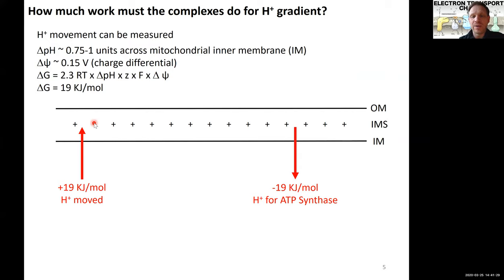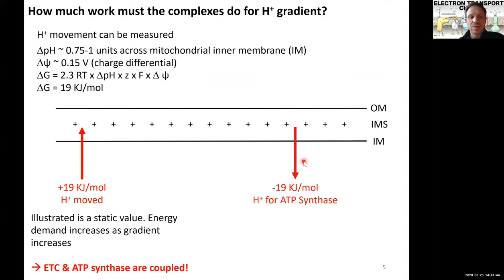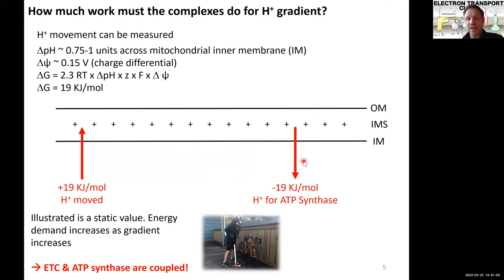This also means that we are releasing an equivalent of 19 kilojoule per mole of protons flowing spontaneously back across a membrane that can be used by the ATP synthase later. But please keep in mind that this is illustrated as a static value. Using the values for this condition, obviously the energy demand increases as the gradient increases. So basically you can imagine this as pumping up your bike tire. The more you pump in, the harder it gets to pump in even more. Same idea. But then when you release it, you also release more air.